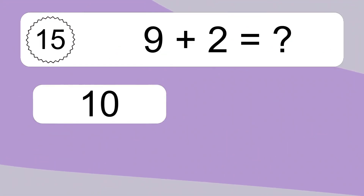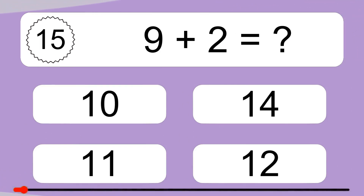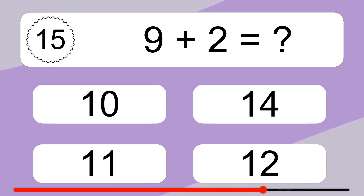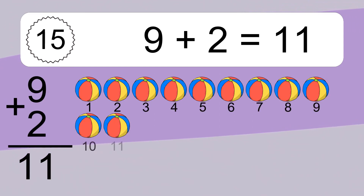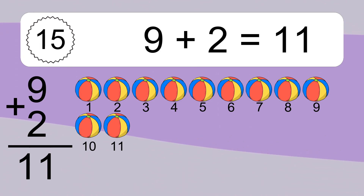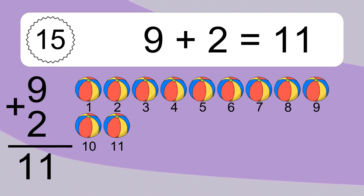9 plus 2 equals what? 9 plus 2 equals 11. Let's count it. 1, 2, 3, 4, 5, 6, 7, 8, 9, 10, 11.